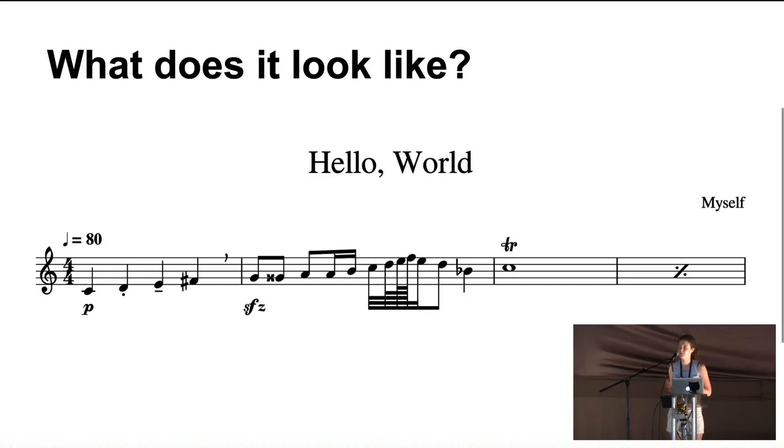Horizontally we've got time. Each unit of music is called a bar, and those are delineated by the vertical lines. It's pretty complicated — there's a lot of information that people are trying to convey.